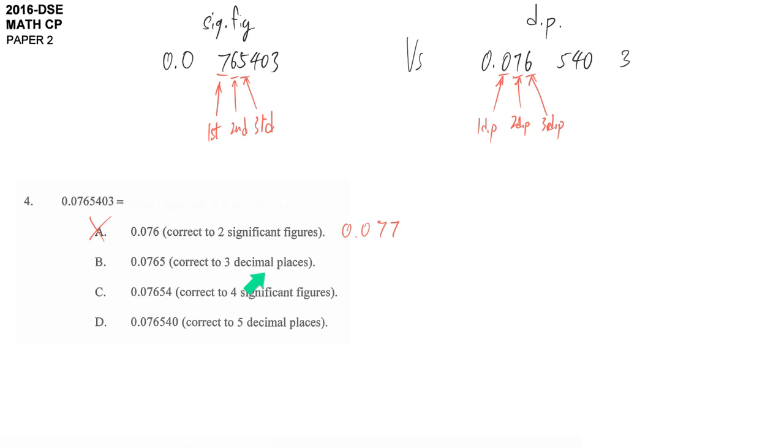Part B is about decimal places. So 1DP, 2DP, 3DP. The answer should be 0.077 again. So this is not 3DP but 4DP here. This is wrong.